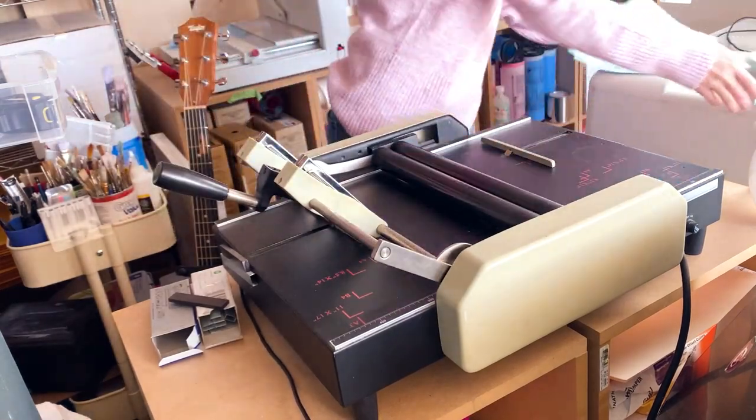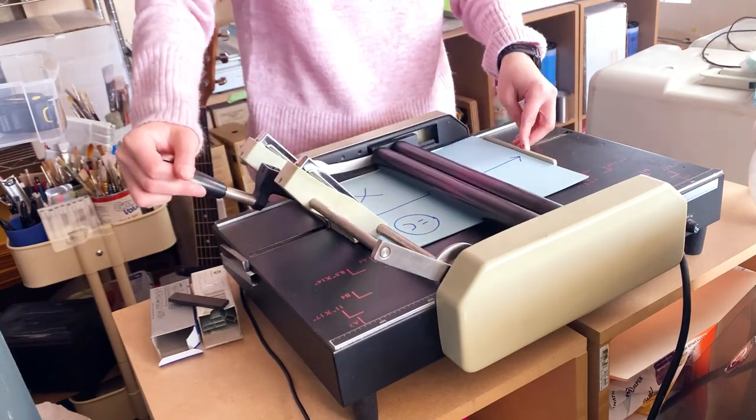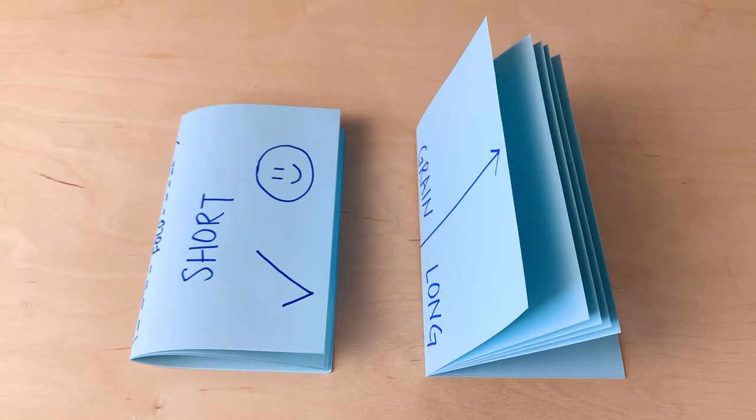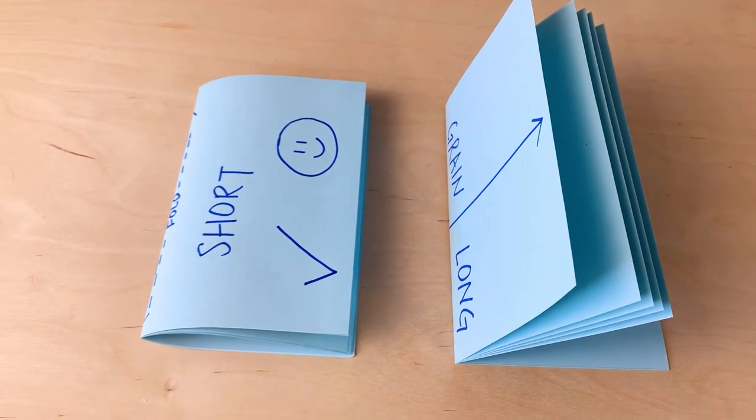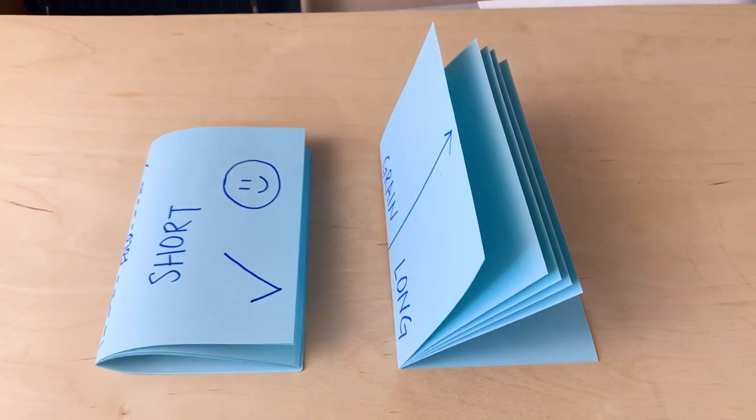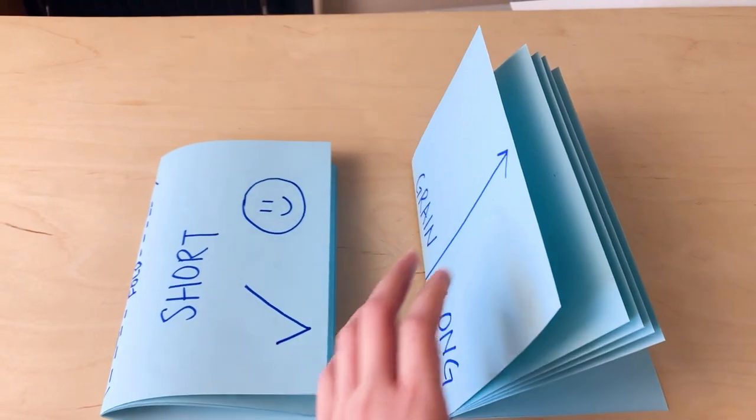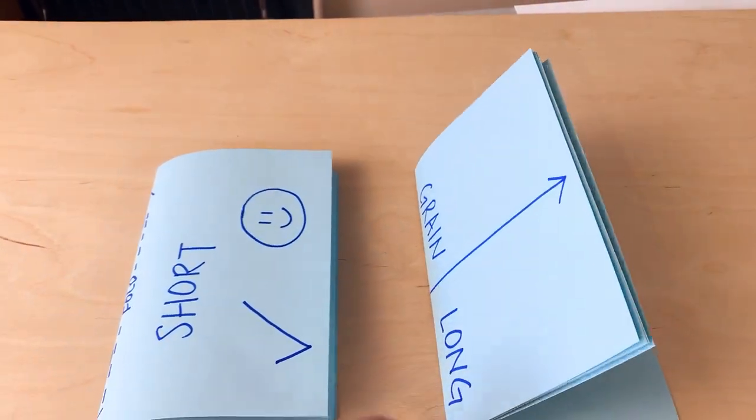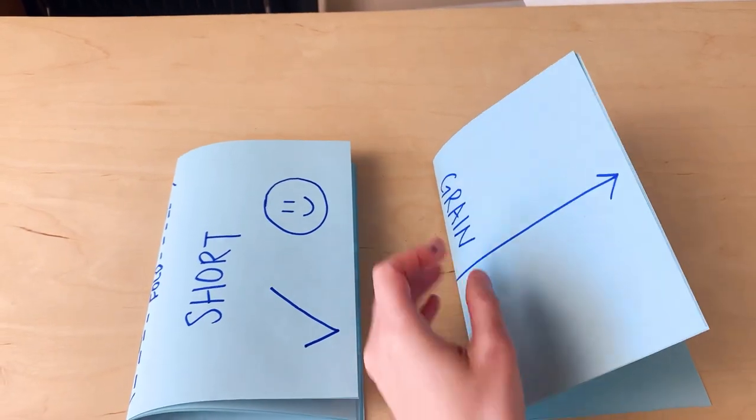So I turned these two different grain stacks into booklets using my booklet maker. And as you can see, they sit differently. The grain short stack, where you have the fold of the spine going parallel to the paper grain, is sitting nicely. Whereas the grain long stack, where you have the grain going across the fold of the spine, is a bit odd.